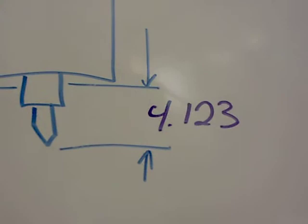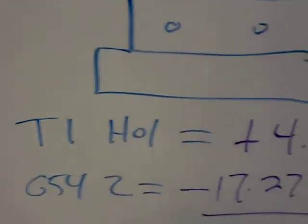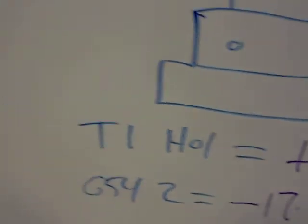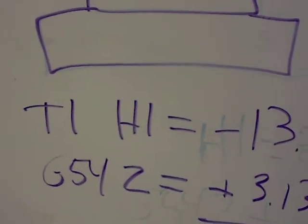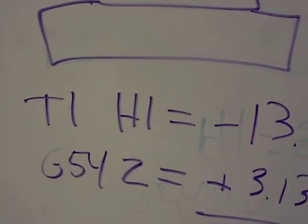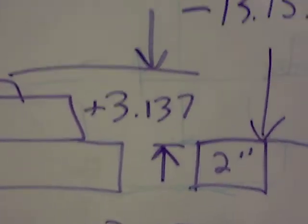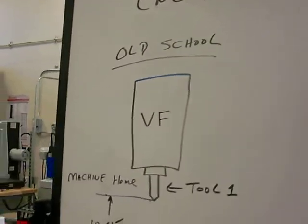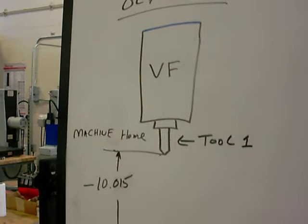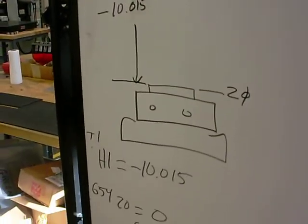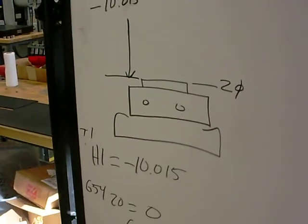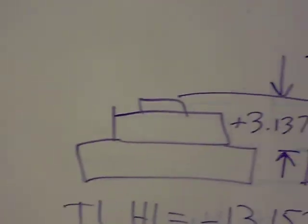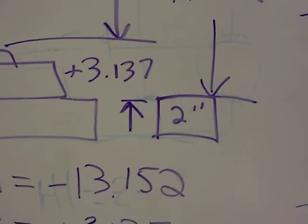So positive numbers in your work offsets is totally different than negative numbers in your tool offsets. Two different angles. You cannot interchange these things. So if you're running your old machines with no probes or companies that just choose not to use probes, they're touching off the top of the part or they're cutting off what we call a common surface.